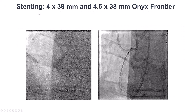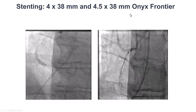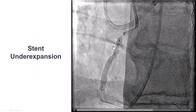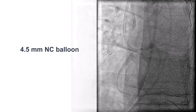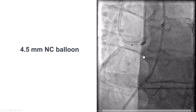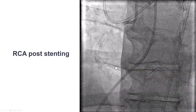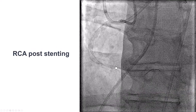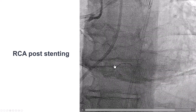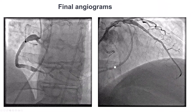We then placed two drug-eluting stents, 4×38 and 4.5×38. The stent did not expand very well initially, which raised some concern, but we post-dilated with a 4.5 mm balloon at 20 atmospheres and the stent expanded nicely. We had a nice result with TIMI 3 flow in the RCA and no stent underexpansion, both angiographically and by ultrasound.